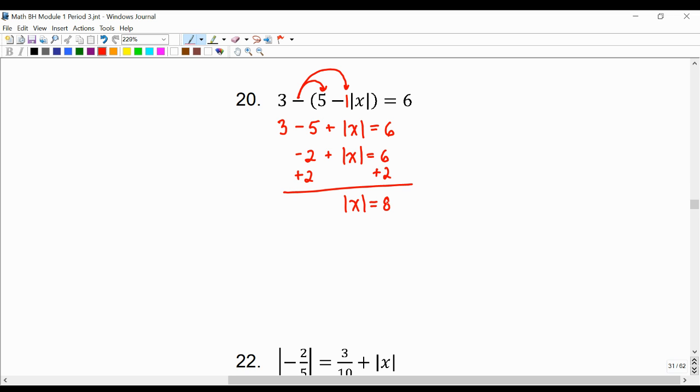This says we need numbers that are 8 units away from 0, and there's 1 to the left, which is negative 8, and there's 1 to the right, which is positive 8. There are two answers. You can also write them this way.